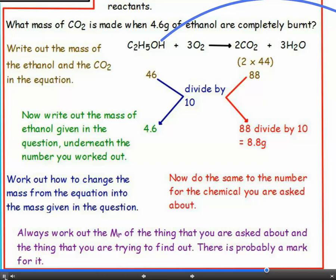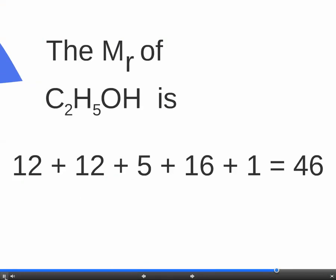In this case, there is one ethanol in the equation, and we can work out its MR. The MR of ethanol, that's C2H5OH, is 46, and so we write this out underneath the ethanol in the equation.